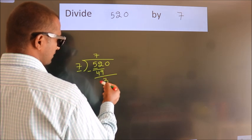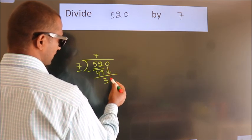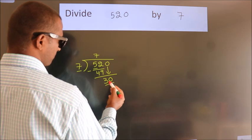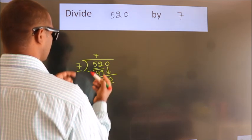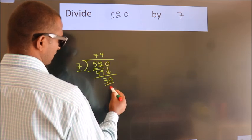After this, bring down the beside number. So 0 down. So 30. A number close to 30 in 7 table is 7 times 4, 28.